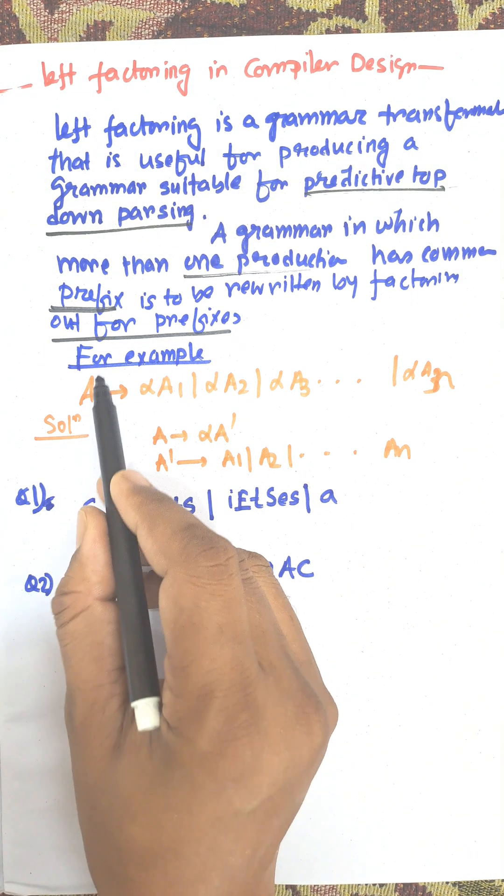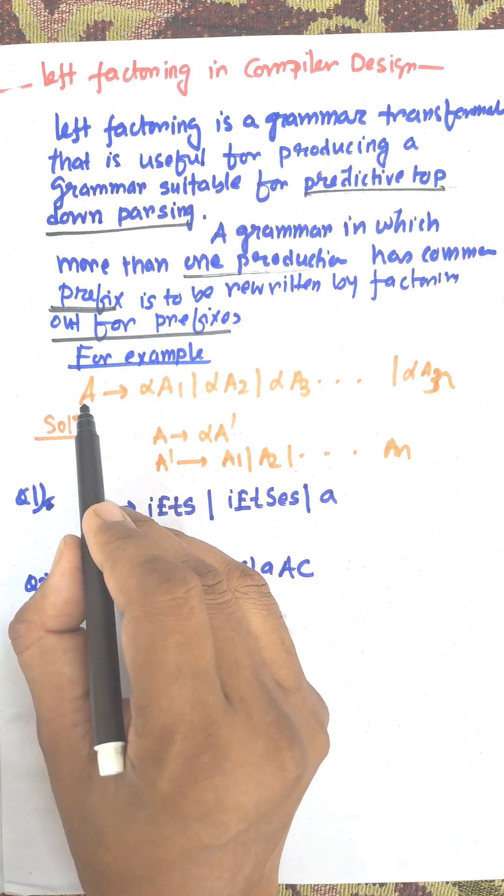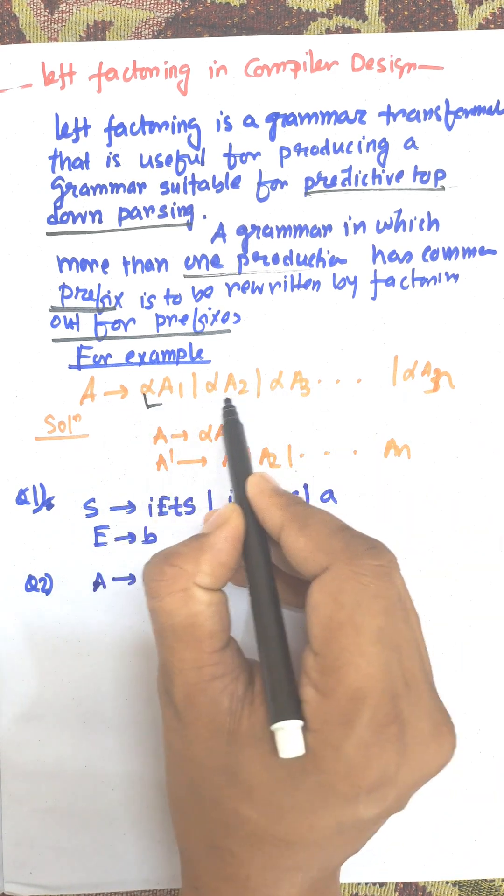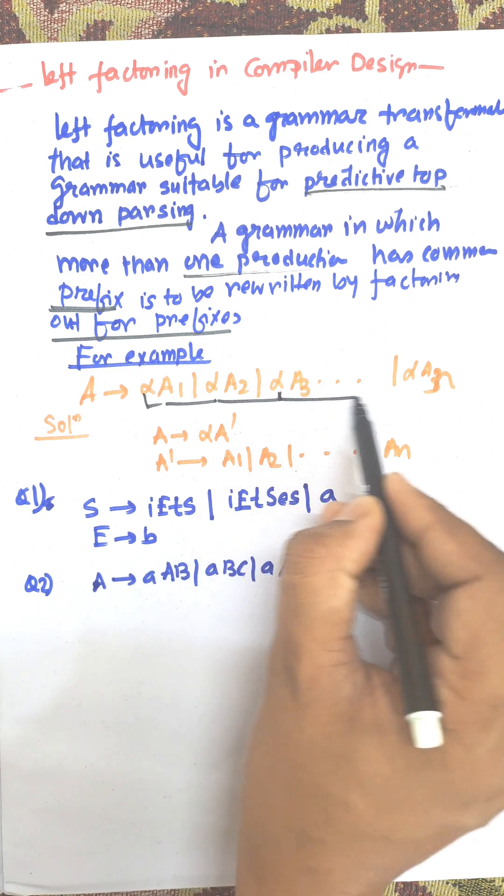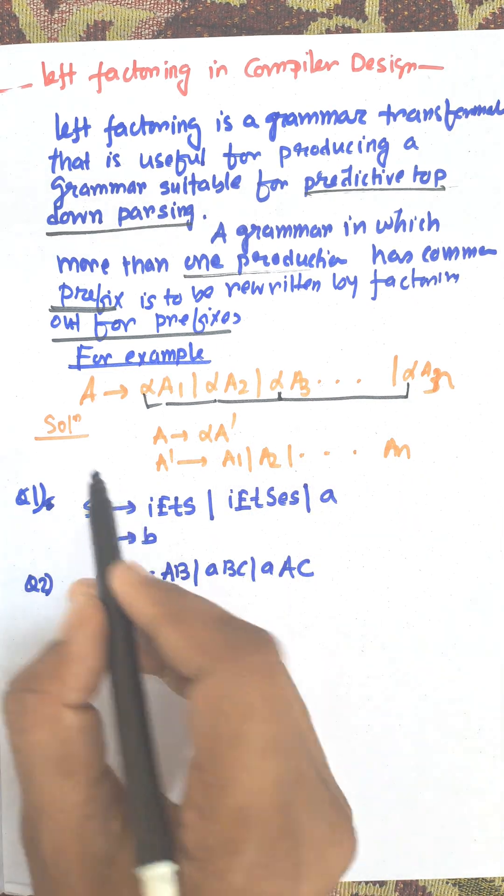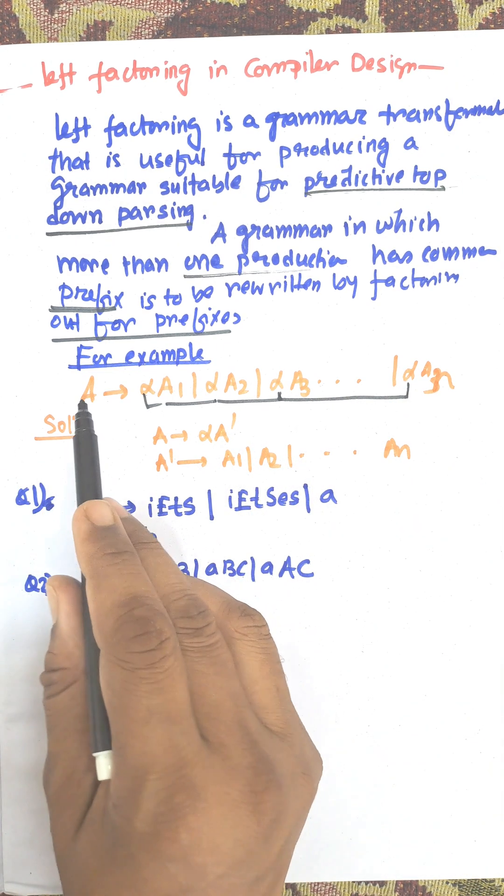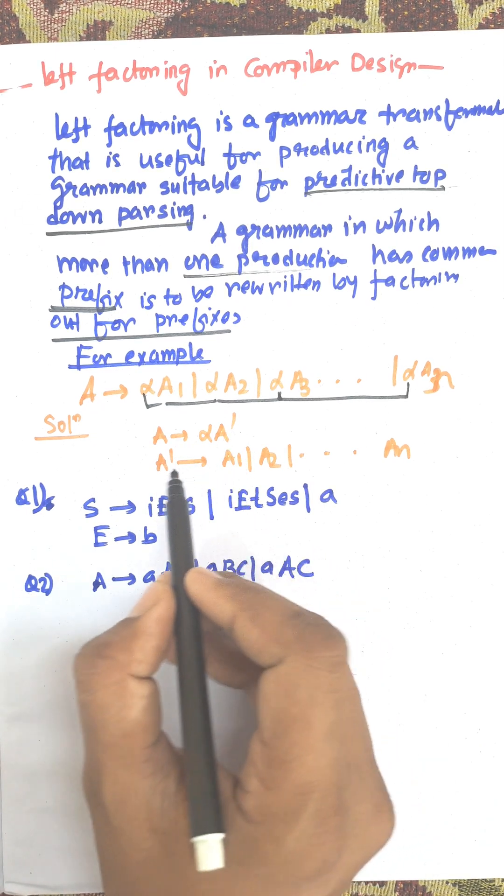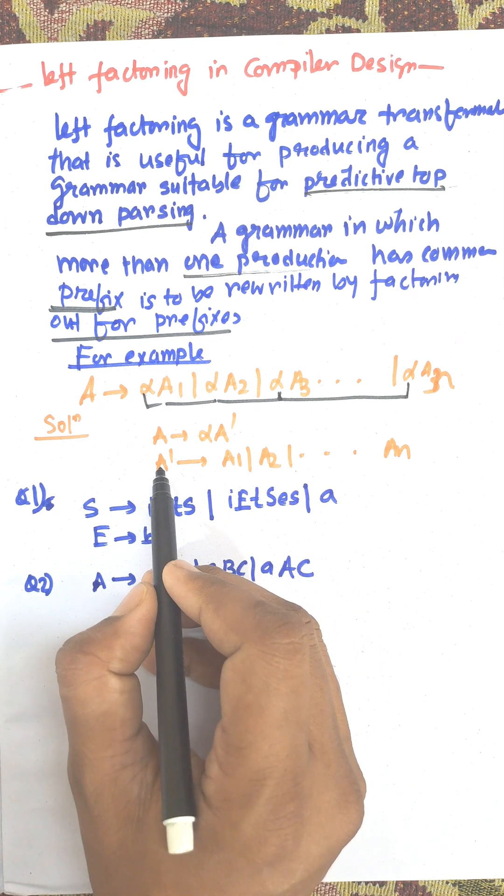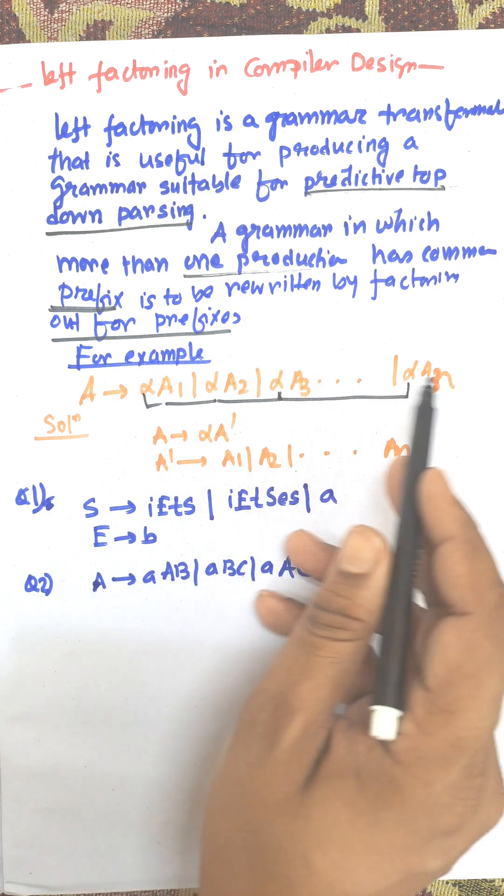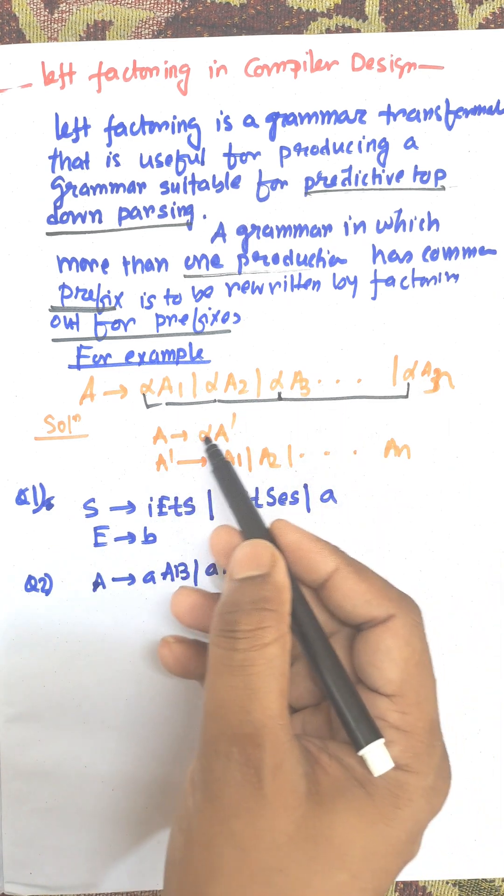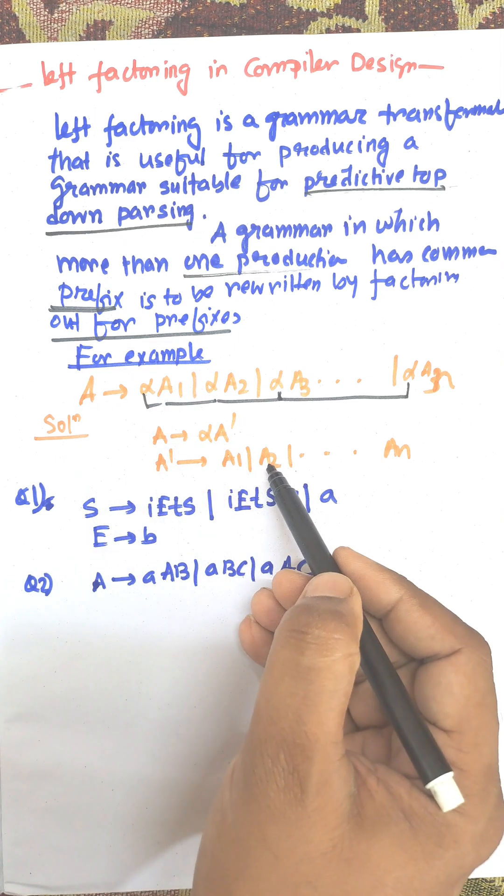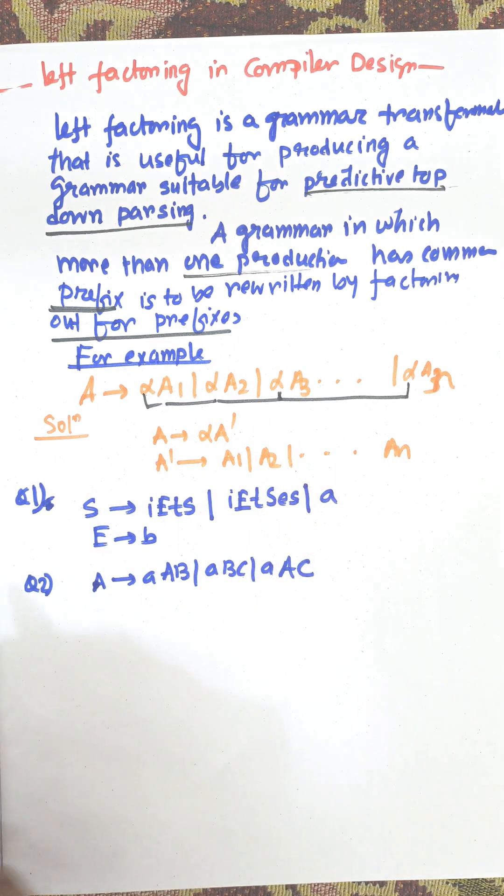For example, A is the variable and it produces alpha a1, alpha a2, alpha a3. Here, alpha is the common prefix. So this needs to be left factored by rewriting the production. That is, A produces alpha A2, where A2 is the next variable, and A2 produces a1, a2, a3. When you replace A2 with a1, you get A produces alpha a1, with a2 you get alpha a2, and so on.